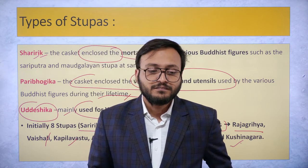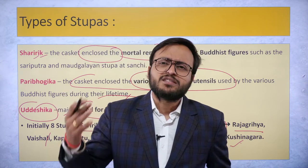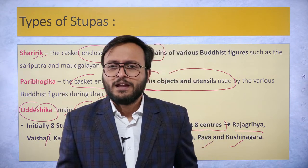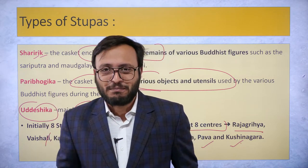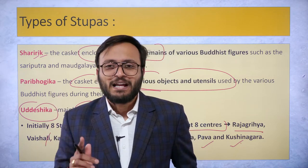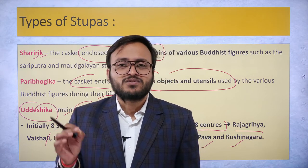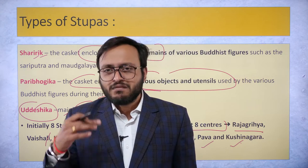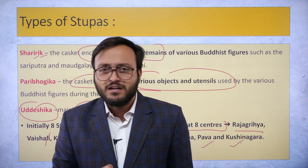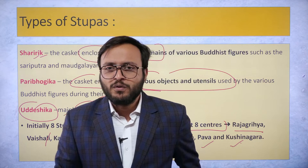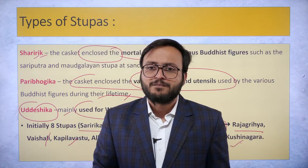There were eight stupas constructed immediately after the death of Lord Buddha, known as the eight Sharirik Chatyas. They were constructed at eight centers: Rajgir, Vaishali, Kapilavastu, Allakappa, Ramagram, Vethadipa, Pava, and Kushinagara. These are the eight earliest stupas constructed within a few years after the death of Lord Buddha in 483 BCE.